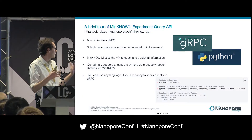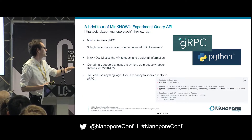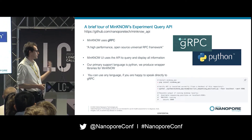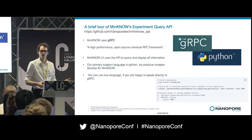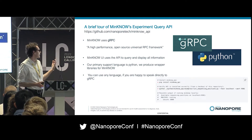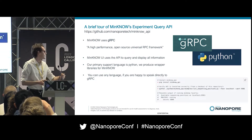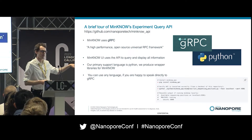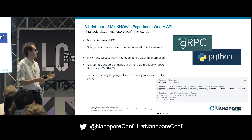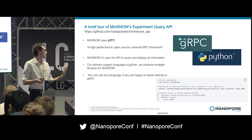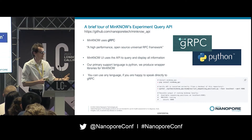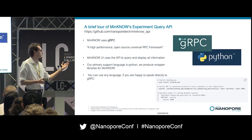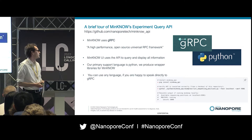The UI we have for Minnow uses our API, but it's also available to you as a gRPC set of files. gRPC is a framework from Google to communicate over the network, which uses protobuf, another framework from Google. We use Python and wrap this framework in a hopefully nice-to-use Python library so you can query what's going on with your sequencer, display data as it's shown in the user interface, and start sequencing runs, all through this API.